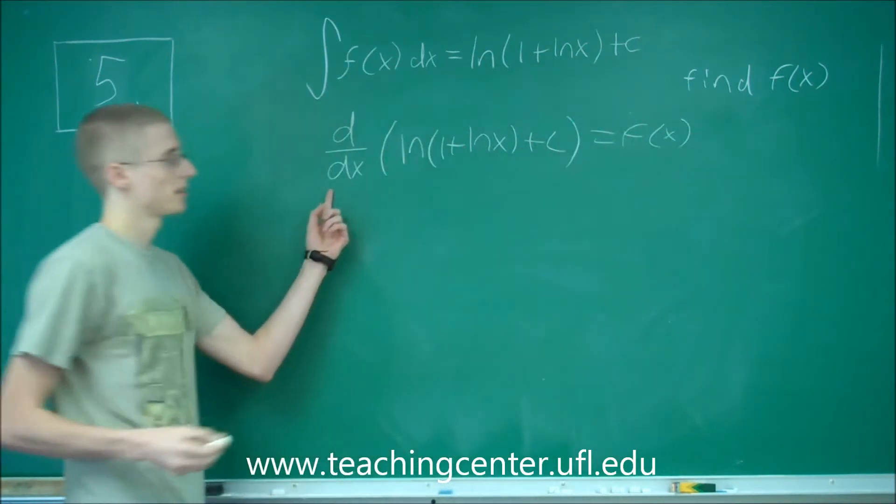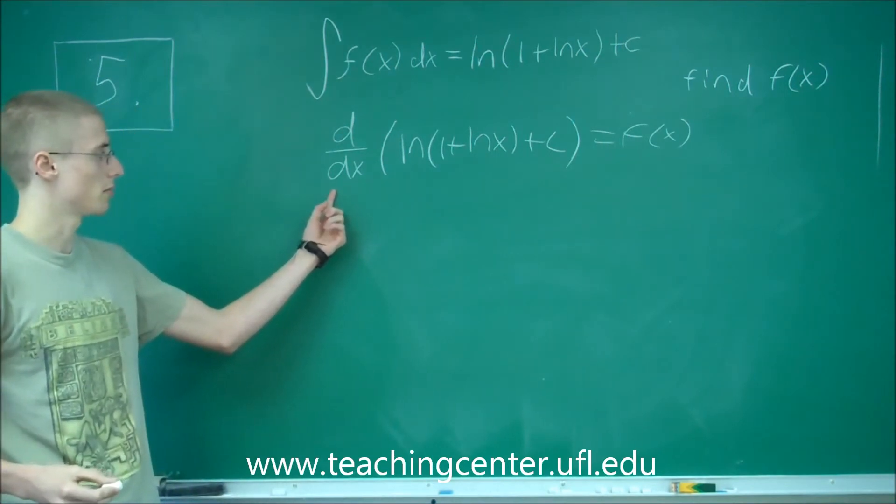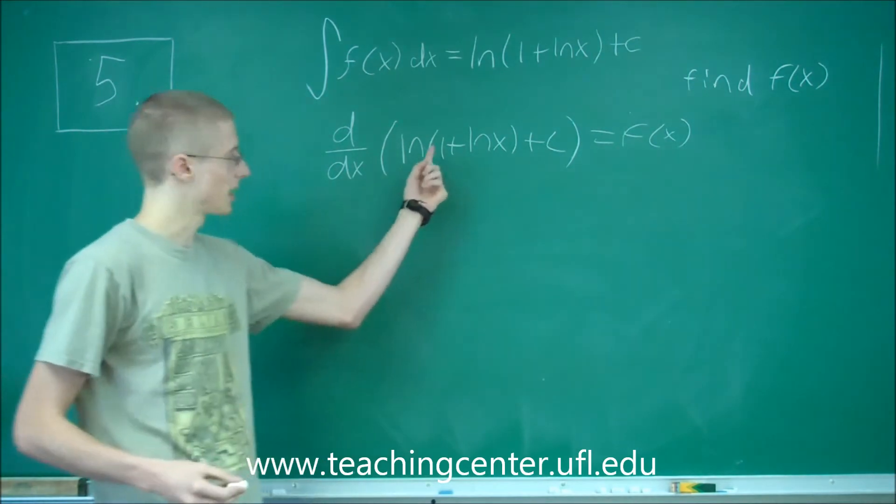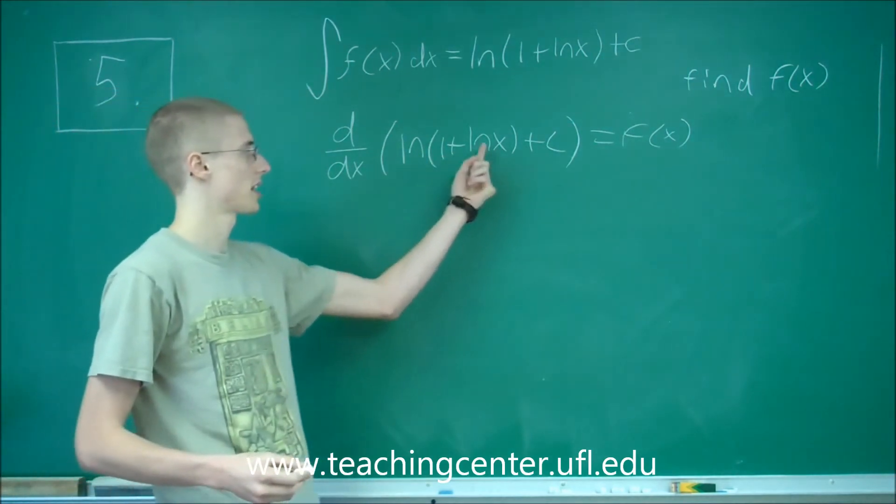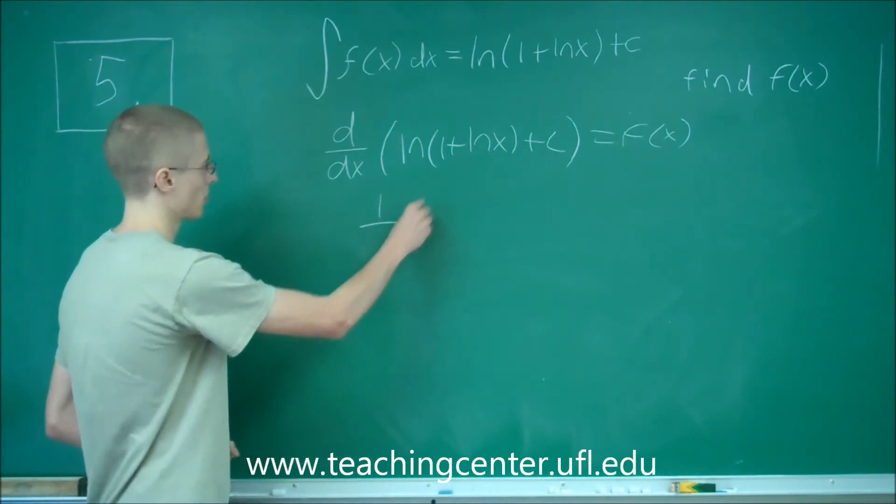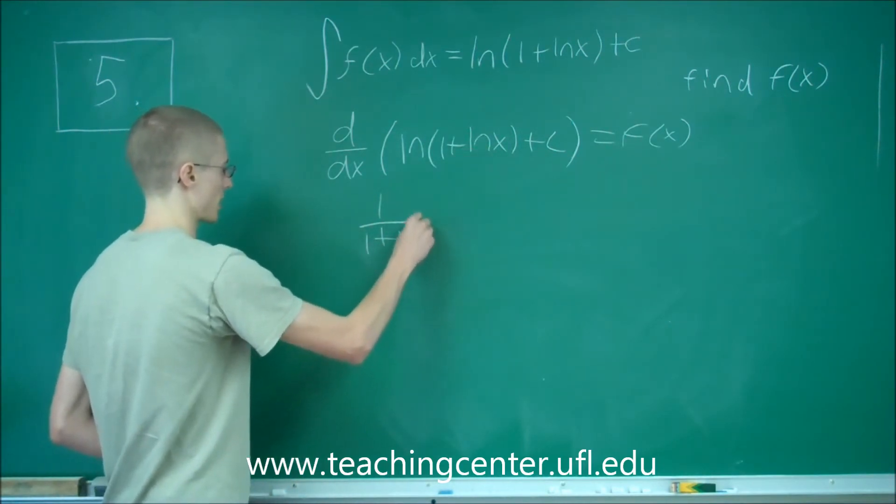This derivative is basically going to be a chain rule. We've got the first link in the chain is the natural log of 1 plus ln of x. The derivative of the natural log is just 1 over what's inside it, so it's 1 over (1 plus ln of x).